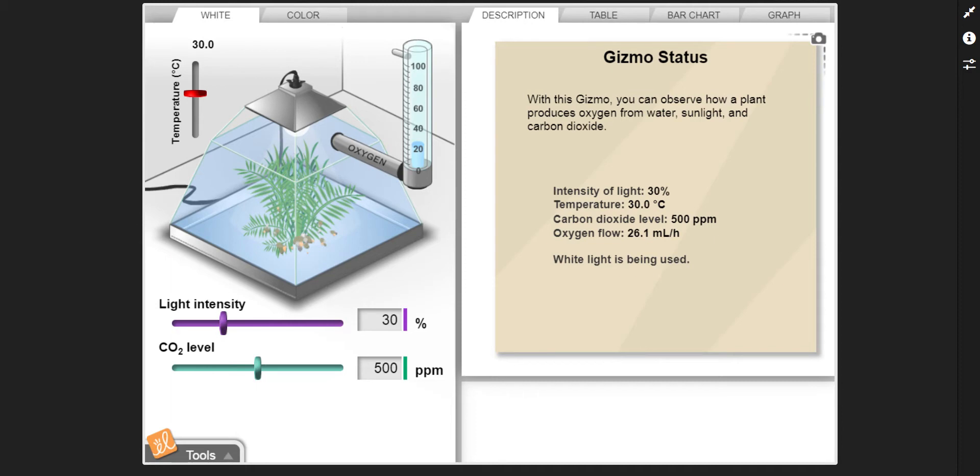Activity A is looking at trying to find the ideal conditions. It starts off with asking you what do you think are going to be the best levels for temperature, light intensity, and carbon dioxide. So what you're trying to do is find the best conditions of the temperature, the light, and the carbon dioxide to try to get the maximum level of oxygen production.